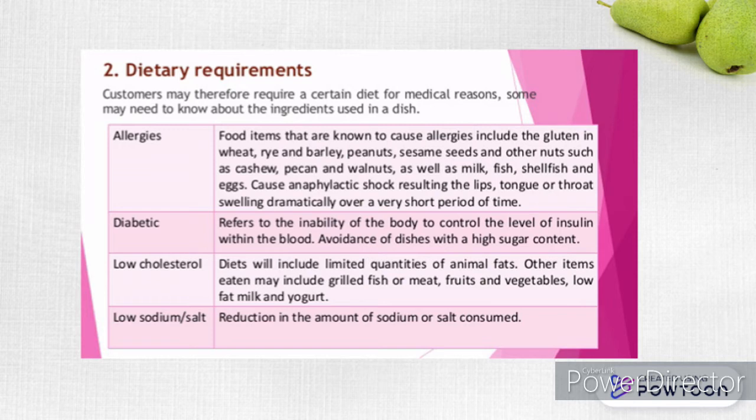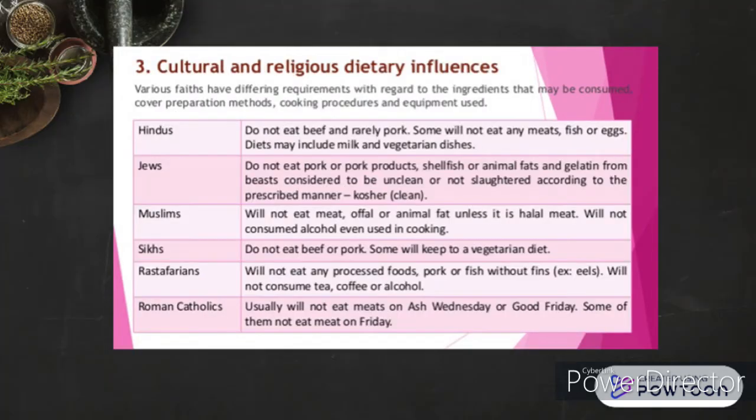For diabetics, it refers to the inability of the body to control insulin levels in the blood, with avoidance of dishes with high sugar content. For low cholesterol diets, this includes limited quantities of animal fats; other items may include grilled fish or meat, fruits, vegetables, low-fat milk, and yogurt. For low sodium diets, there is a reduction in the amount of sodium or salt consumed.